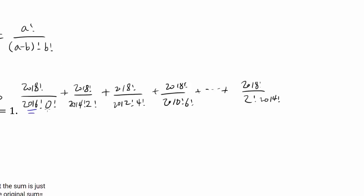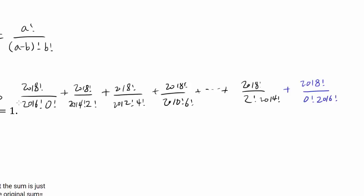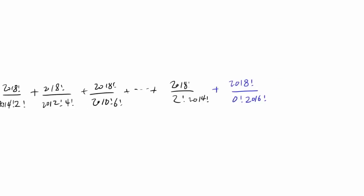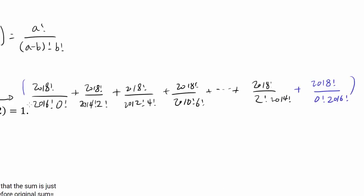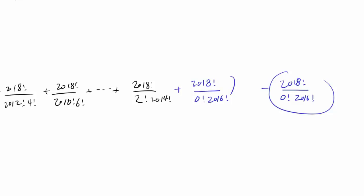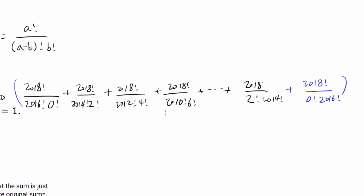It would be more natural and more symmetric to end with 2018 factorial over 0 factorial times 2016 factorial. Usually symmetric expressions, especially in combinatorics, are much easier to simplify. So let's add that last term, but remember we'll have to subtract it out at the end. We can factor out 2018 factorial over 2016 factorial and focus on the remaining part.